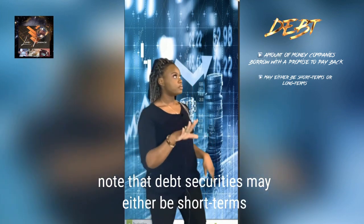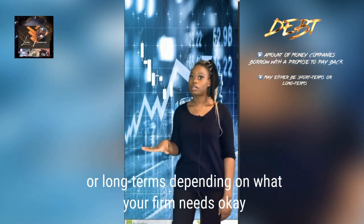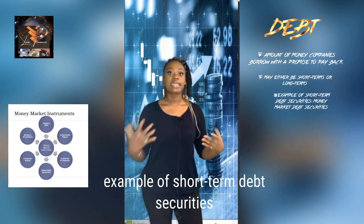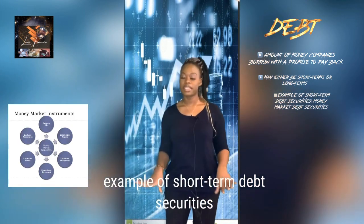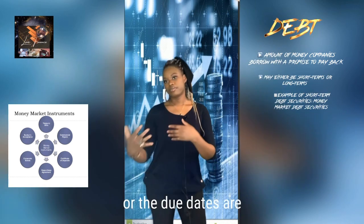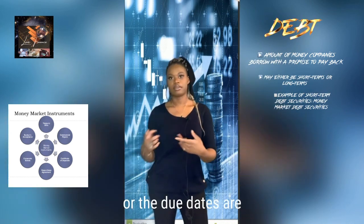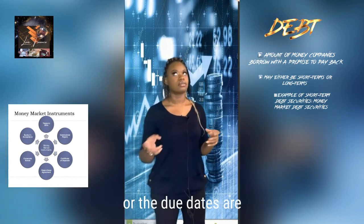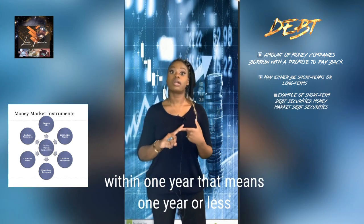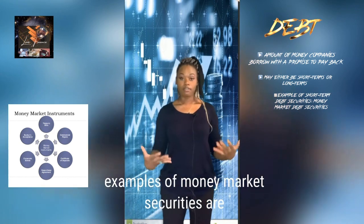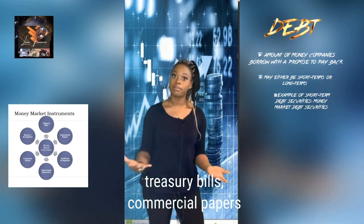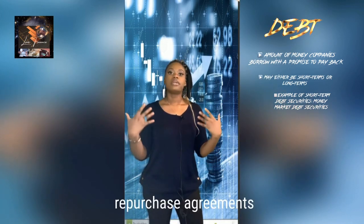Examples of short-term debt securities are money market securities. Their maturity, or due dates, are generally within one year — that means one year or less. Examples of money market securities are treasury bills, commercial paper, and repurchase agreements.